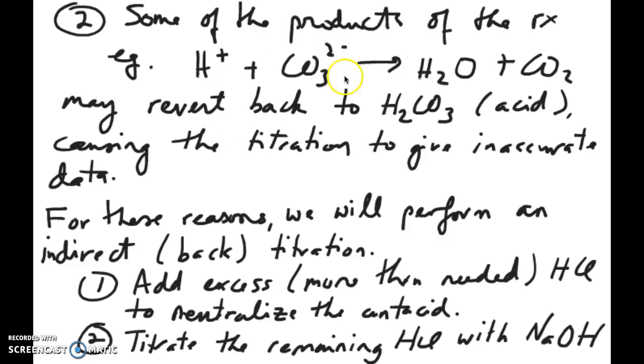The second problem is because the antacid contains carbonate. Some of these antacids contain carbonate and carbonate can react with acids that are in the solution to produce carbonic acid later on which will then cause some issues with the amount giving us the correct amount of base that we have in our antacid.